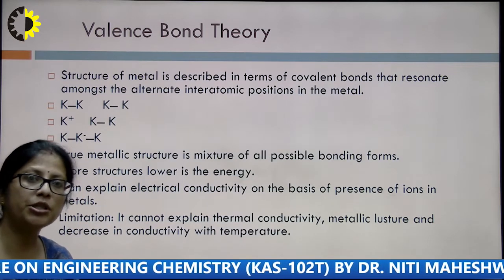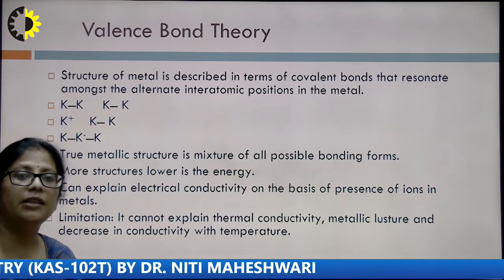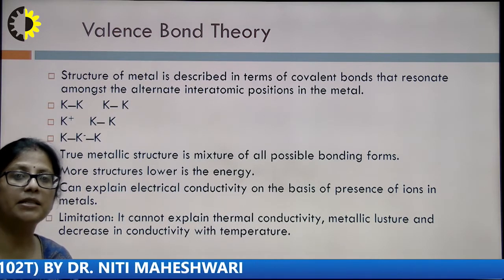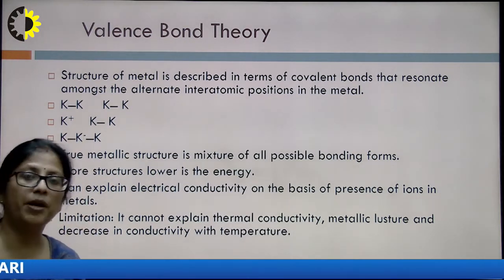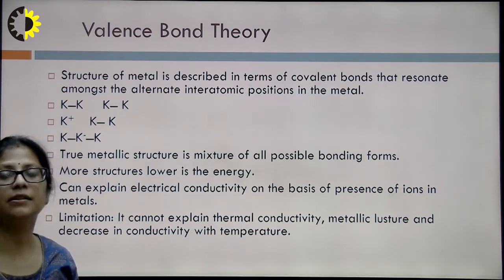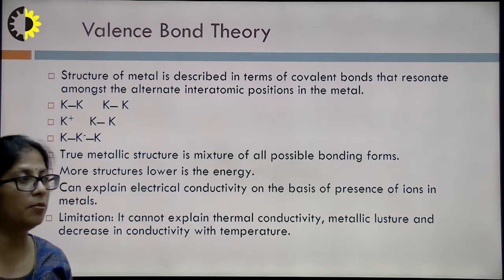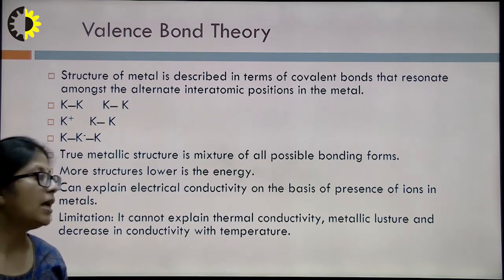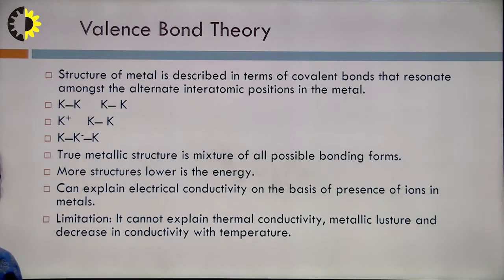More structures enable the lowering of energy. One can explain electrical conductivity on the basis of the ions present in the metal — the negative and positive charges present in the metal show electrical conductivity. However, valence bond theory could not explain thermal conductivity, metallic lustre, or why conductivity decreases with increasing temperature. So valence bond theory was also discarded.